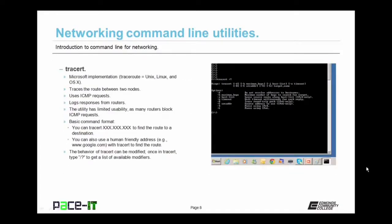Another useful utility is Tracert — Microsoft's implementation of the Traceroute command from Unix/Linux. It traces the route between two nodes as it goes through routers, using ICMP requests. It logs responses from routers and the end node but has limited usability as many routers block ICMP requests. It uses the same basic format as ping, beginning with tracert, and its behavior can be modified using the forward slash question mark.